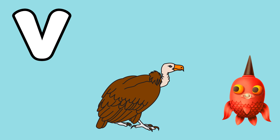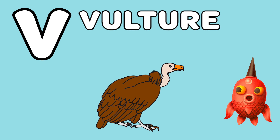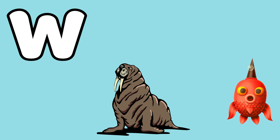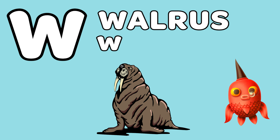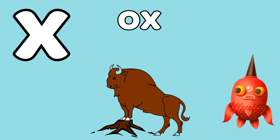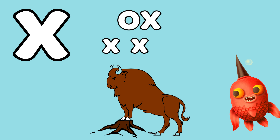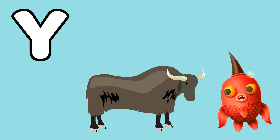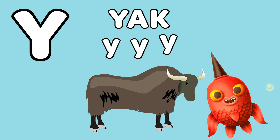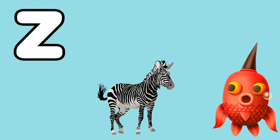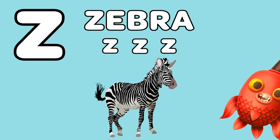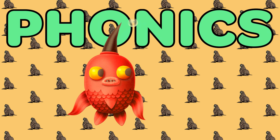U is for Urchin, urchin. V is for Vulture, vulture. W is for Walrus, walrus. X is for Ox, ox. Y is for Yak, yak. Z is for Zebra, zebra.